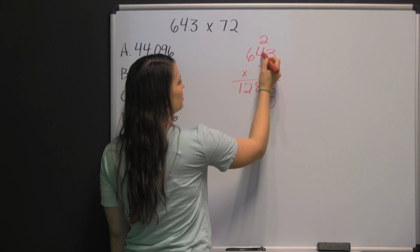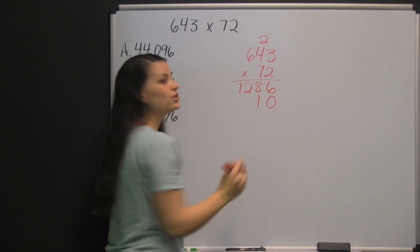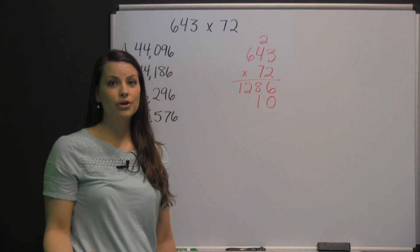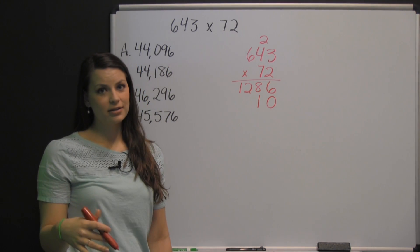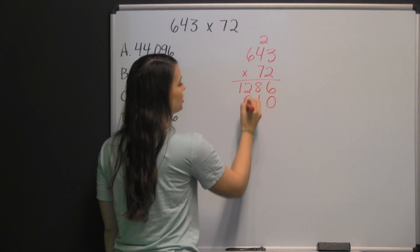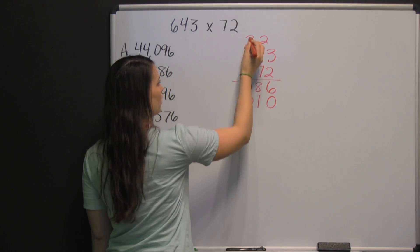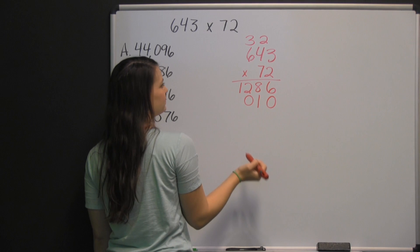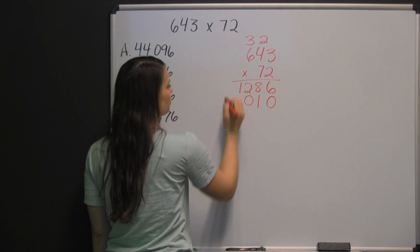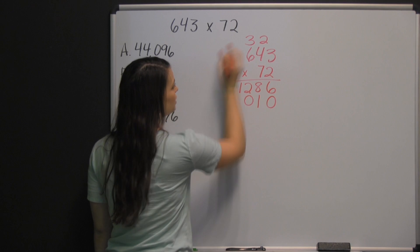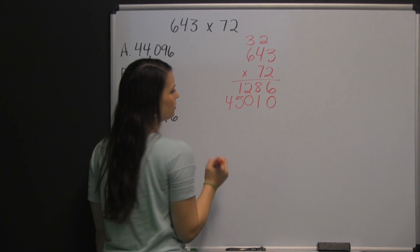Now we multiply seven times four — 28 — and add the two to that product: 30. Again, we have a two-digit product, so we write down the digit in the ones place and carry the digit in the tens place. Seven times six is 42, plus the three is 45. Since we have nowhere to carry it, we just go ahead and write the 45.